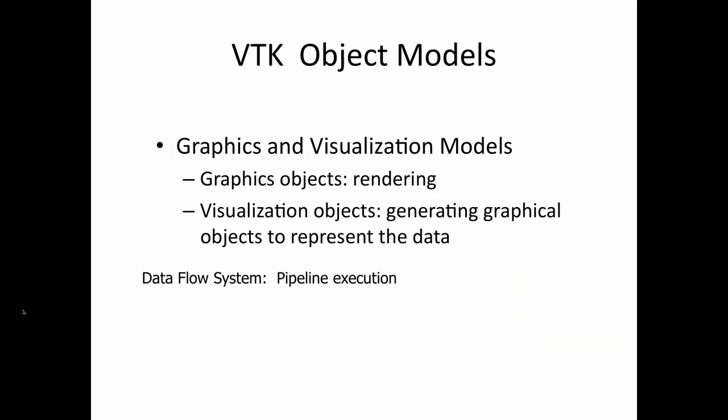Now let's look at VTK object models. Because VTK is written in C++, it has lots of objects. Basically, the objects in VTK can be divided into two different models: the graphics model and the visualization model. VTK objects are either graphics objects or visualization processing objects. The graphics objects are responsible for rendering — that is, generating the final images. The visualization objects are responsible for generating graphical objects to represent the data.